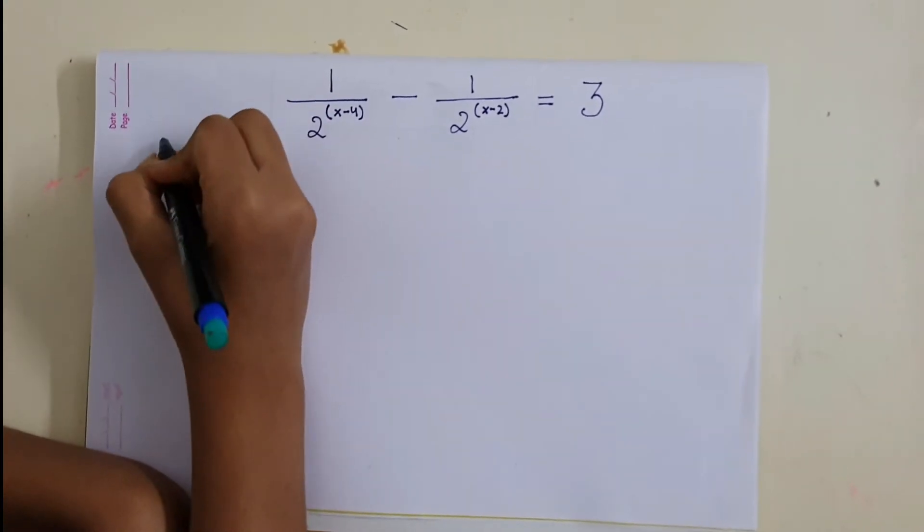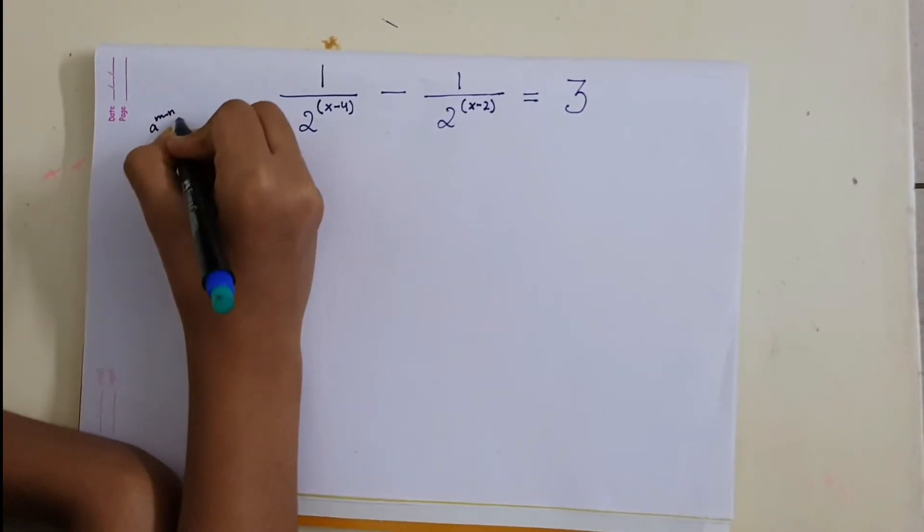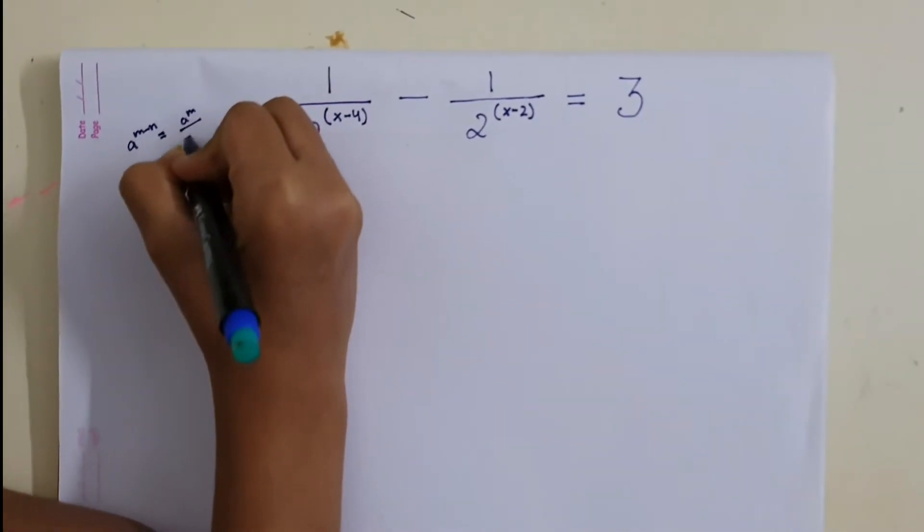So in this question we are going to apply the formula a raised to the power m minus n equals to a raised to power m by a raised to power n.